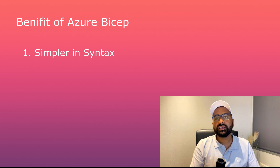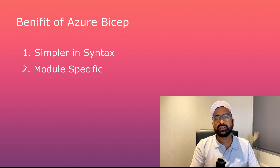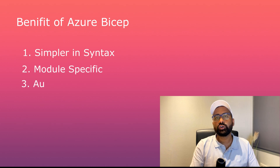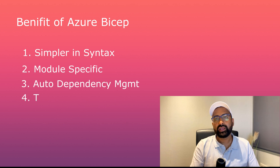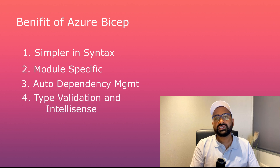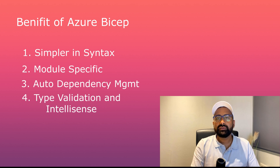Second, it is module-specific, meaning you can write your Bicep template as a module and refer to it in your parent-child template. Third, it has automatic dependency management — you don't have to write your code in sequence; based on your dependencies, it will handle execution order. Fourth, it has rich validation and intelligence, giving you errors and suggestions as you write your code.